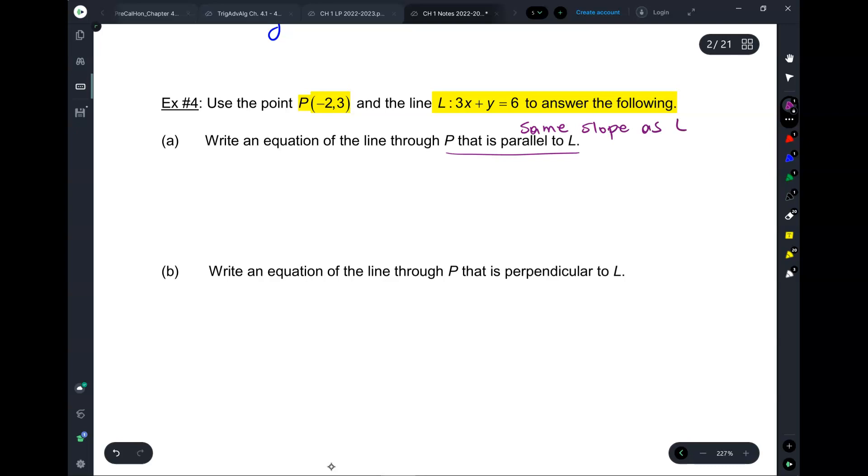So, okay, here is l. 3x plus y equals 6. You got to solve it for y. y equals negative 3x plus 6, so it's negative 3. There we go.